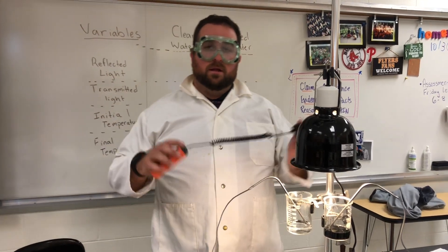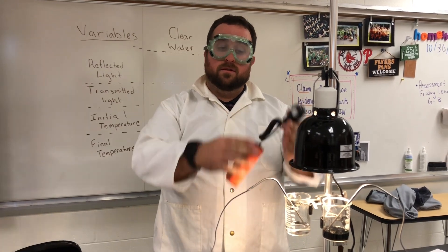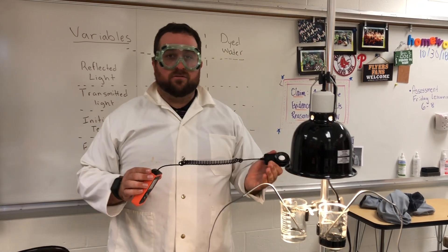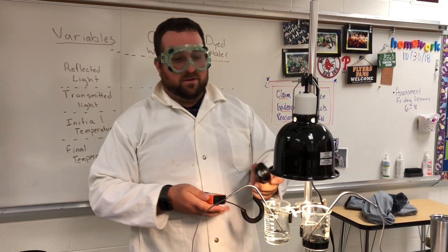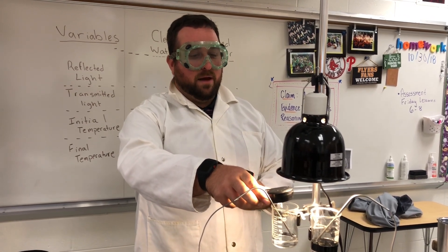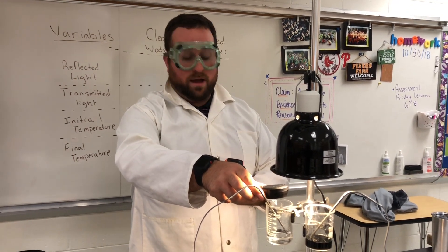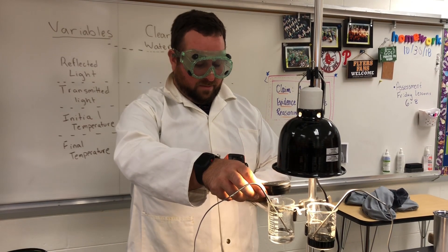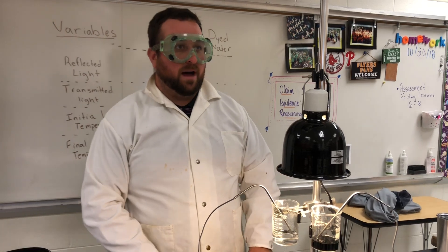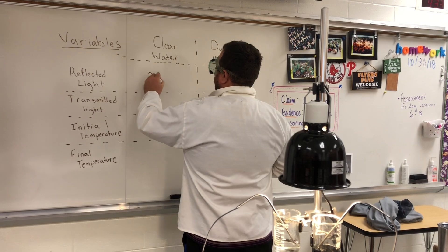Now that the temperature is recorded, let's take a look at what the light is doing as it either reflects or transmits through our clear and our dyed water. We're going to test first the reflected light. I'm going to take my light sensor and place it over top of the water, and measure the amount of lux of light coming off of the water. I'm getting a reading of 245 lux of light being reflected off of the clear water.